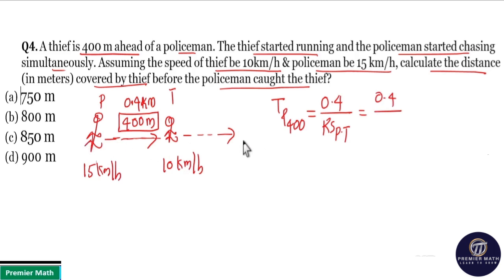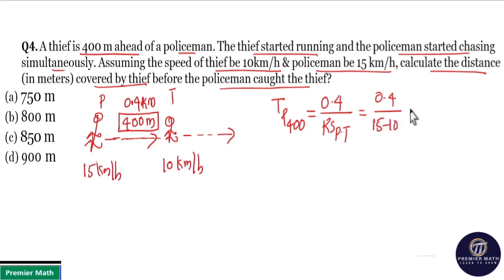Since both are running in the same direction, the relative speed equals the difference between the speeds of both bodies. So relative speed = 15 minus 10 = 5 km per hour. Therefore, time = 0.4 divided by 5 hours.